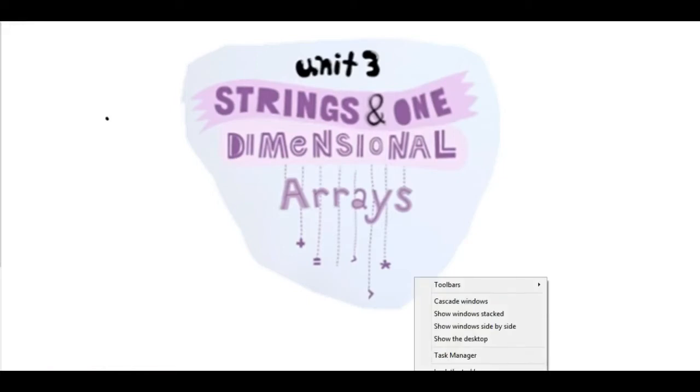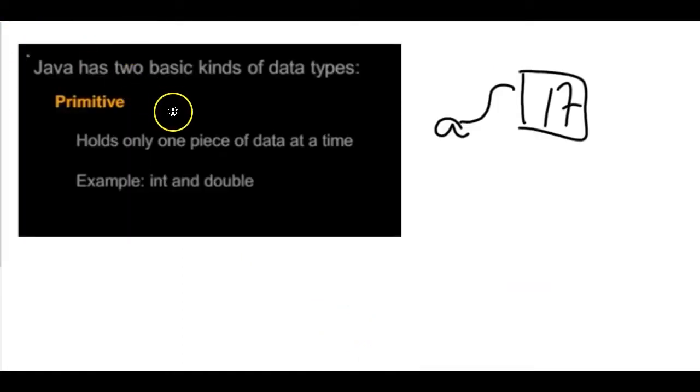We've actually dealt with both primitives and class types before. Today, we're going to start with a class. So the primitive is able to hold one piece of data. Some examples that we've looked at are ints and doubles. We could have a variable called a, and it could be storing the number 17. We call this a Java primitive data type. In memory, it's literally just holding the number 17, and we have this variable a, and it's acting like a tag.